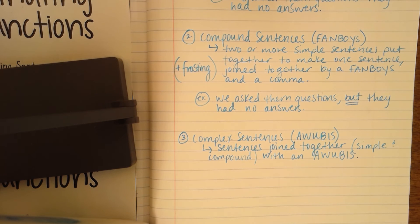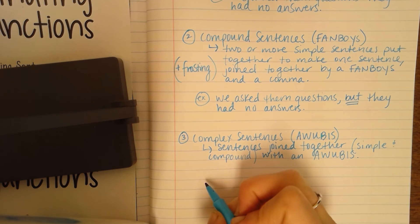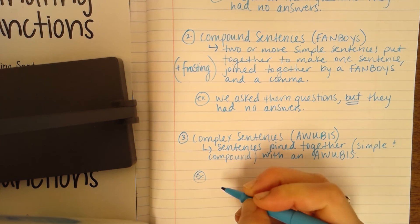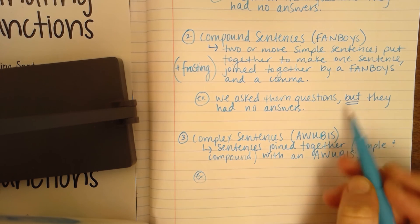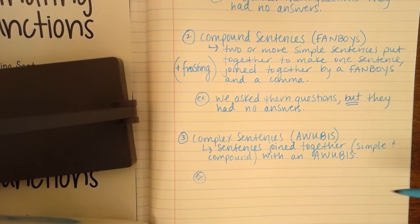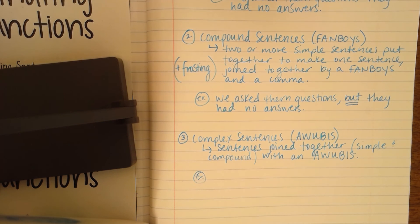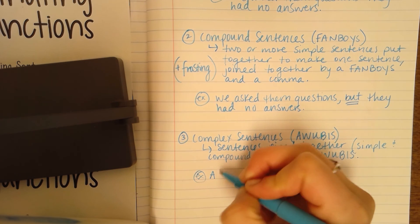If there's no AWOOBUS word, then it's not a complex sentence. It's kind of the same idea as a compound sentence — they're just using a different connecting word to connect two sentences together. AWOOBUS words are subordinating conjunctions, which is that little list we glued in that has 50 conjunctions on it. There are probably even more that exist in the world, but 50 is plenty to worry about in this case.